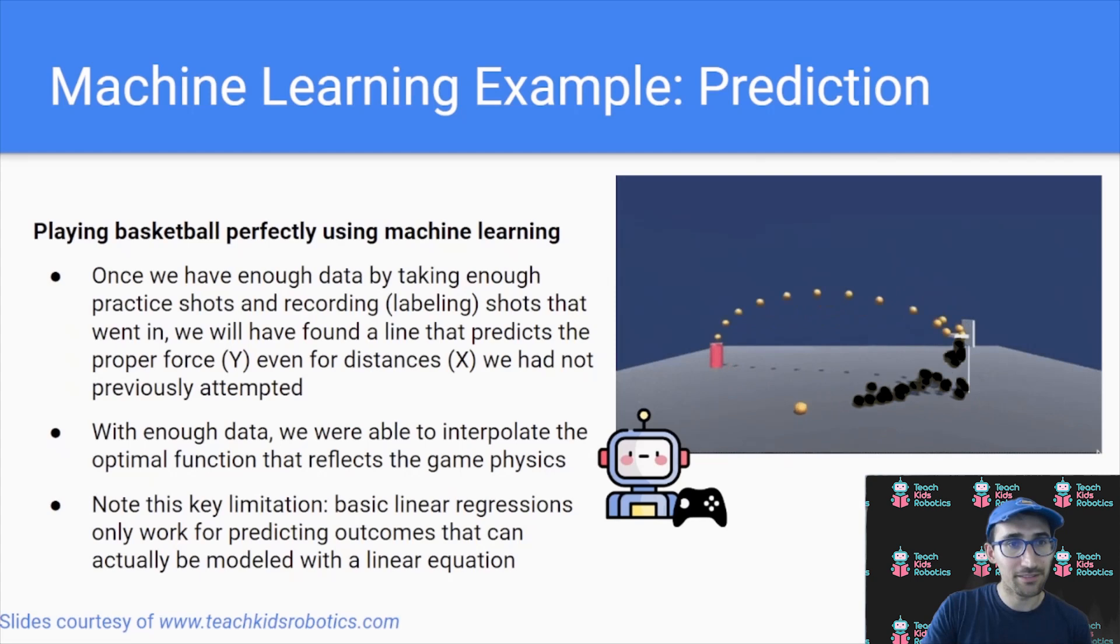So once we have enough data, the robot or whatever is now capable of actually making a basket no matter where it is, even if it's never made a shot there before. And again, how did it do this?